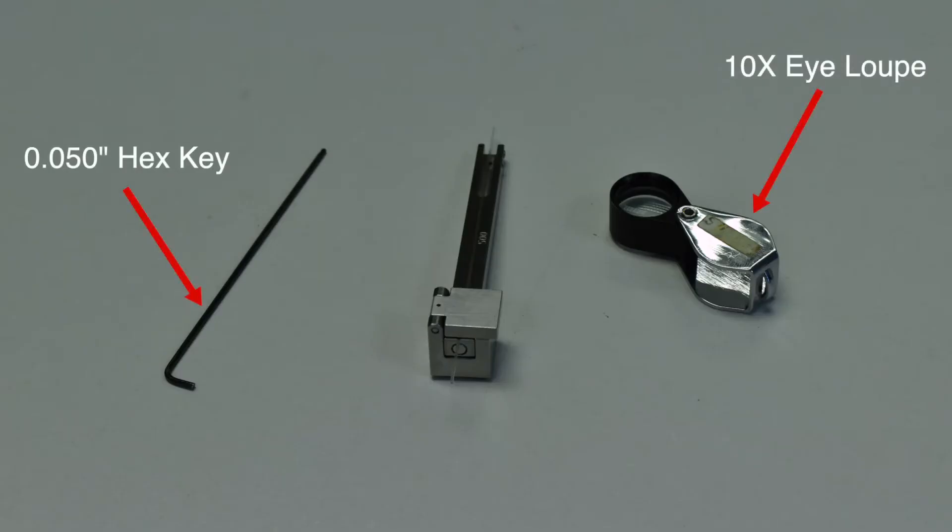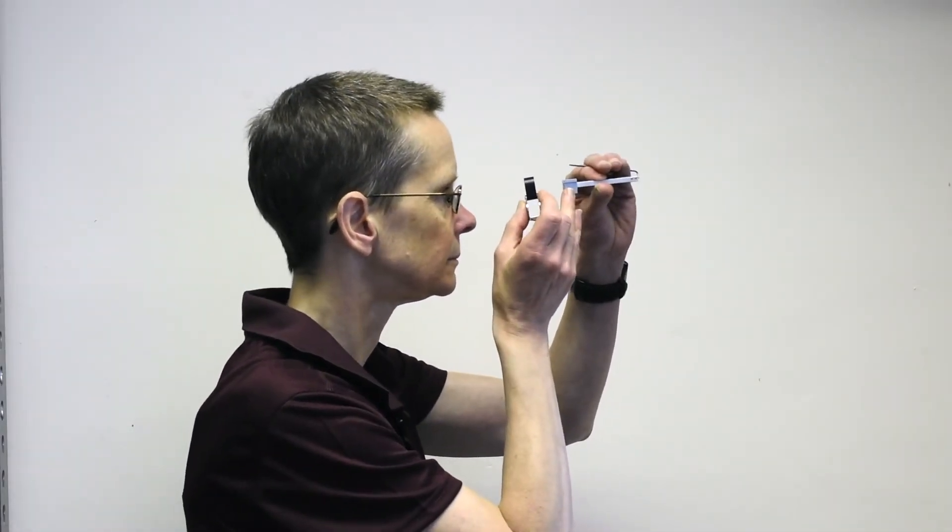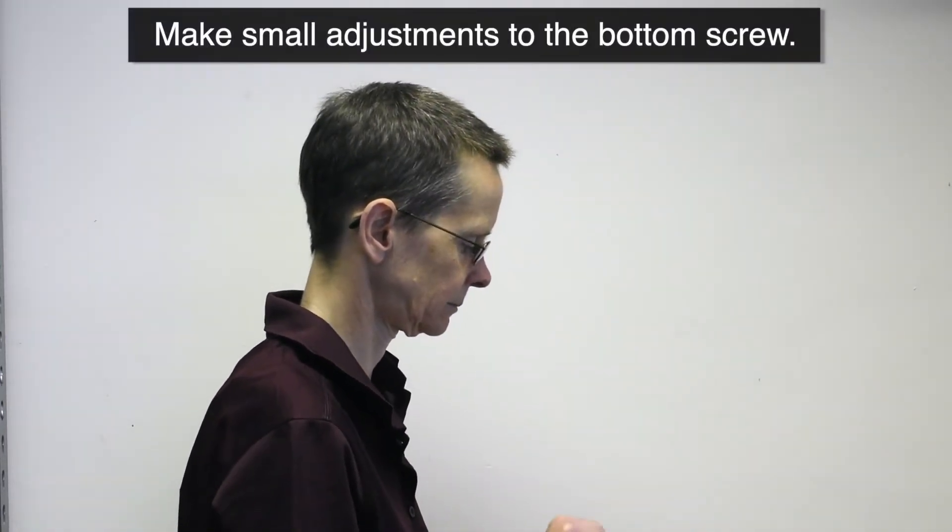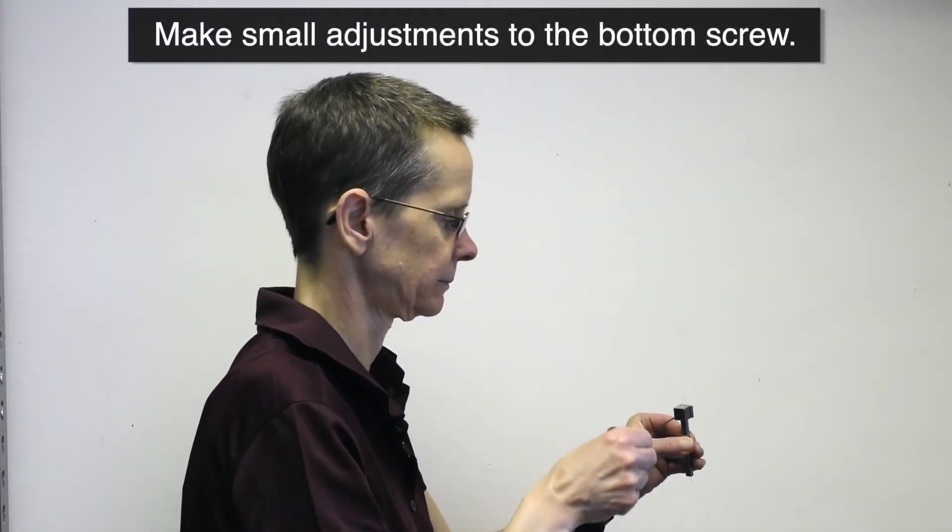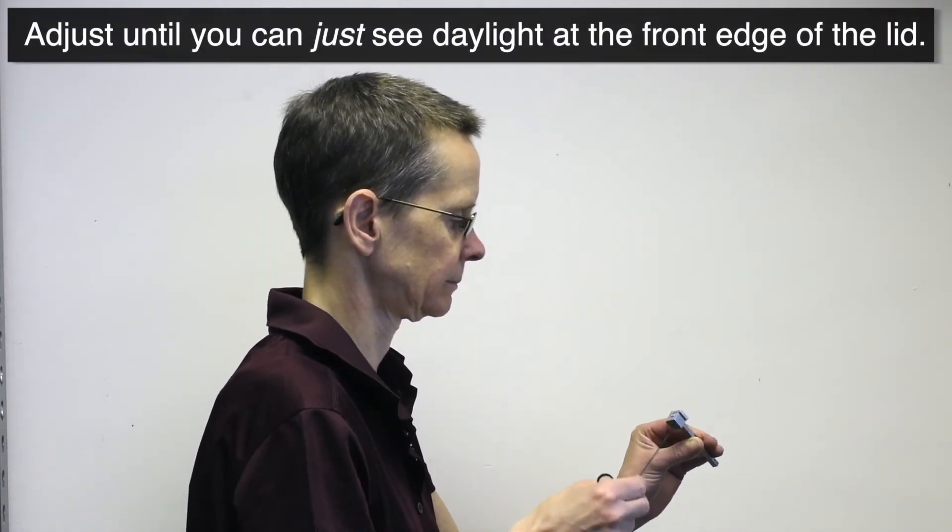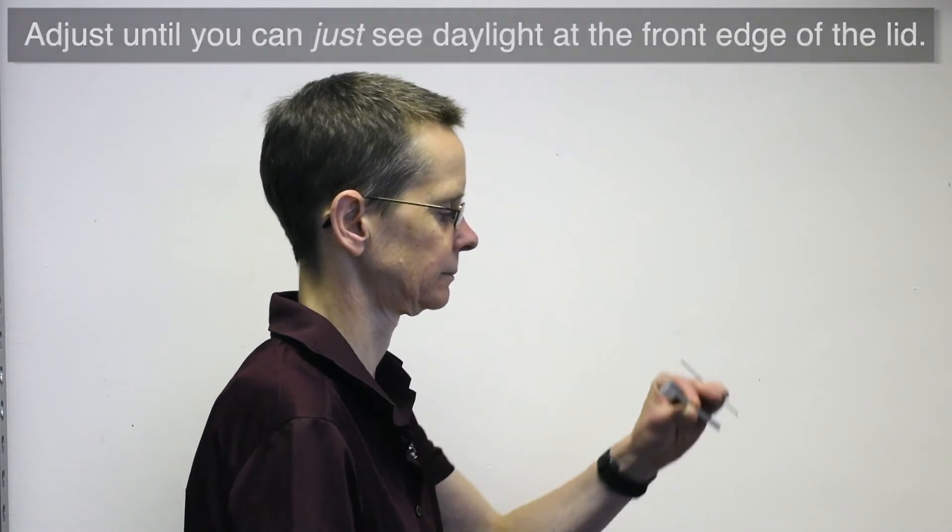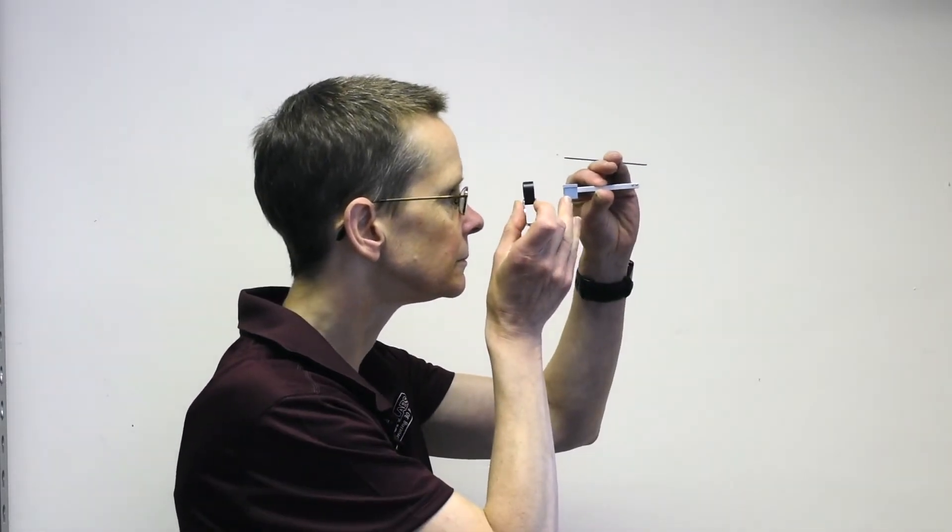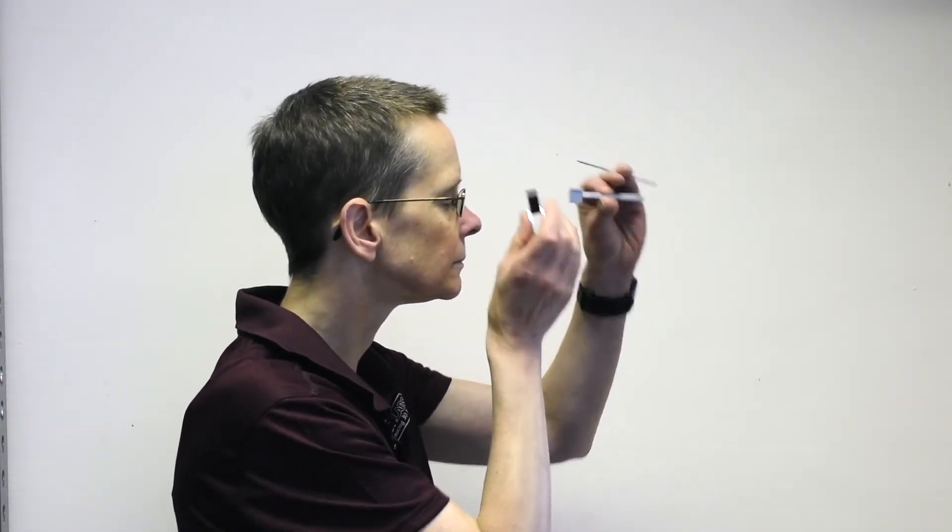The final fine adjustment of the height of the insert is performed using a x10 eye loupe. Look at the front, non-hinge edge of the transfer clamp's lid. The aim is to make adjustments to the screw on the bottom of the transfer clamp so that you can just see daylight between the top surface of the clamp and the lower surface of the clamp's lid. Once this point has been reached, the fiber will be held in place in the insert just by the attractive force of the magnets in the lid.